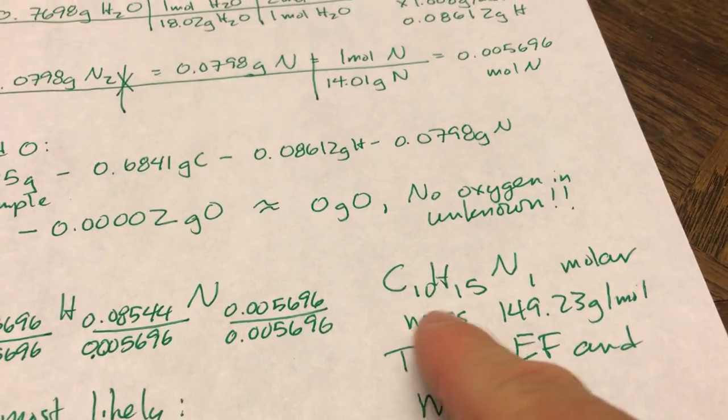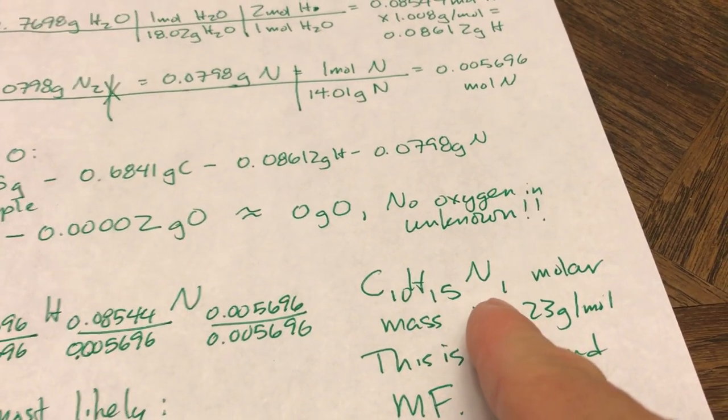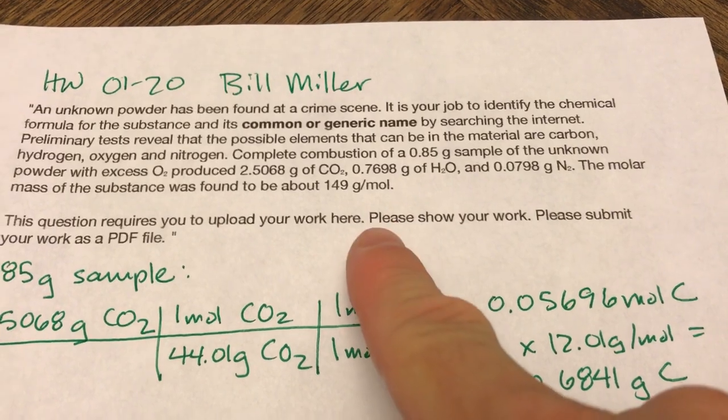I got C10, H15, and N1, which has a molar mass of 149.23. And 149 was the molar mass of my unknown.